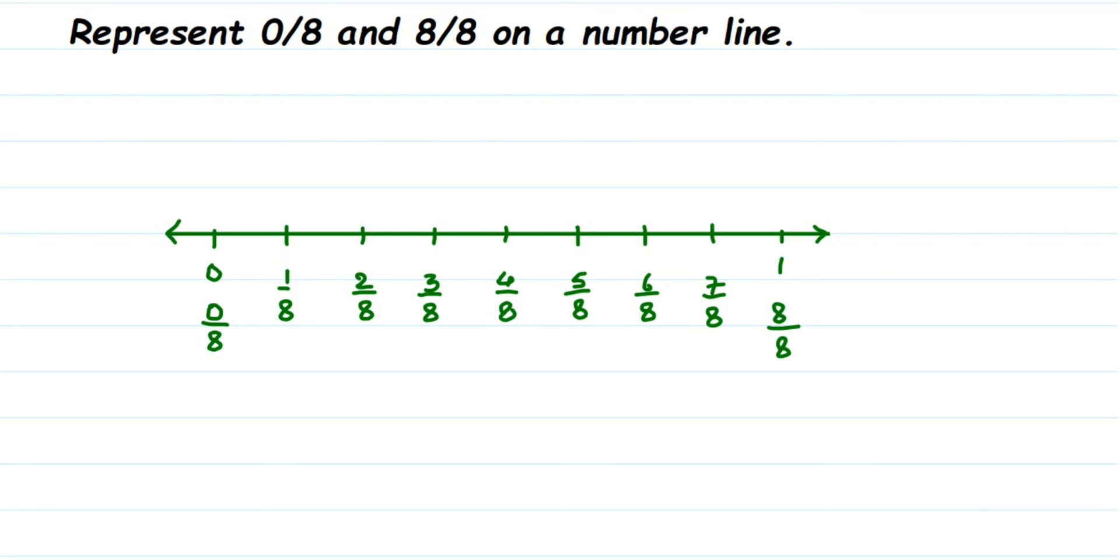Now in the question they ask us to mark 0/8, which is here. 0/8 is nothing but 0, and I'm going to mark it as A. And the next number is 8/8, so 8/8 is nothing but 1, which I'm going to mark as B. That's it.